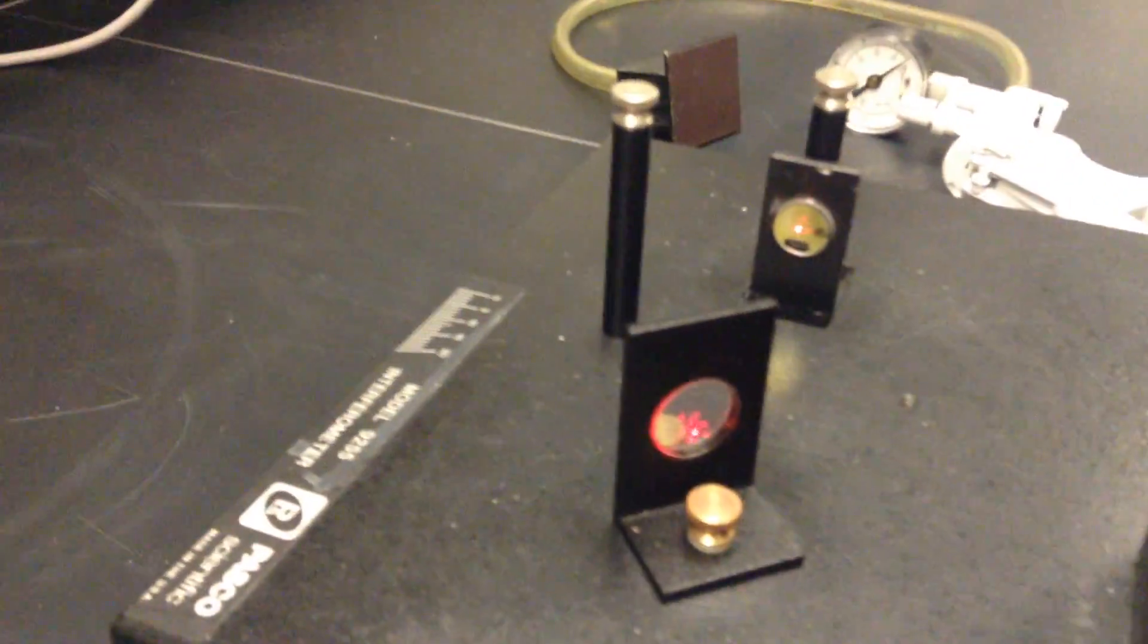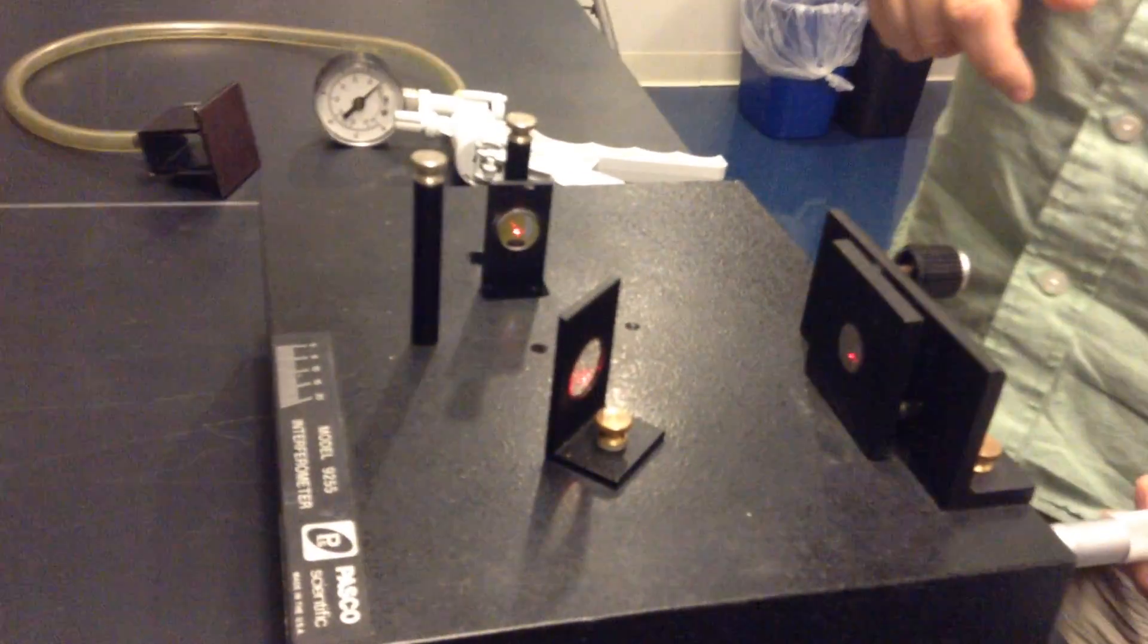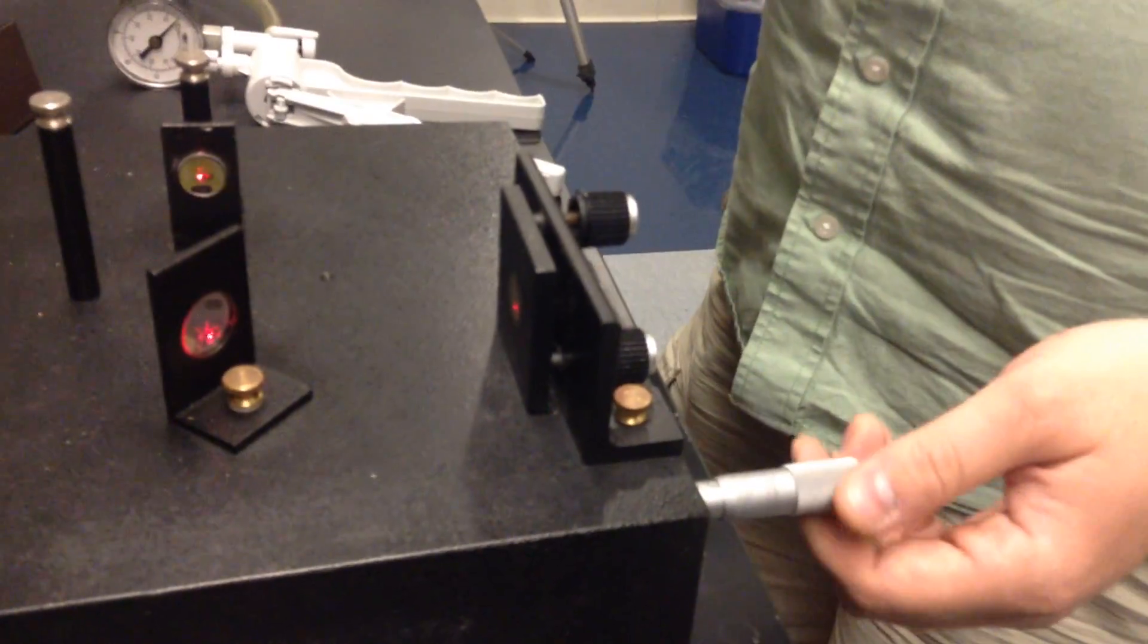So some of the light is going to go this way towards this mirror. Some of it's going to go towards this mirror, which is actually movable if you move this dial here, which is kind of the dial on a vernier caliper.